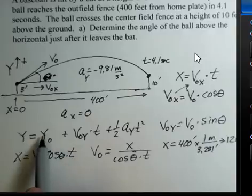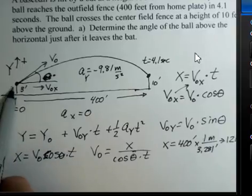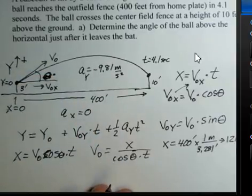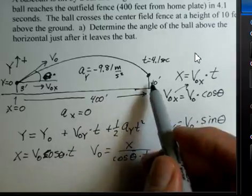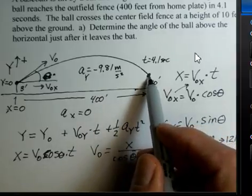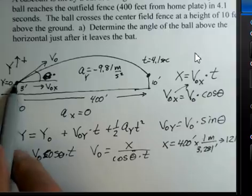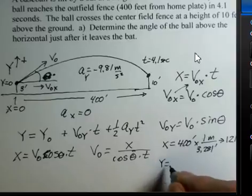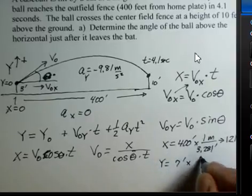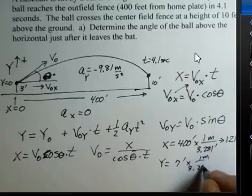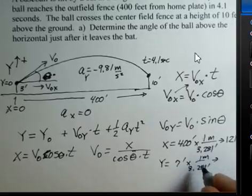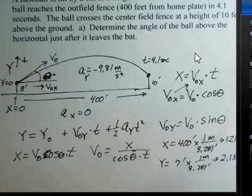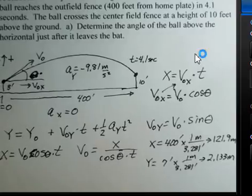I need y and y-naught. Let's change our coordinate system. Let's make y equal to zero where the ball was struck by the bat. When we get to the fence, we're going to be 7 feet higher than where we started. This is 3 feet off the ground, this is 10 feet off the ground. So the y-value would be 7 feet times this conversion factor, and that gives us a value of 2.133 meters for the y. And y-naught will be equal to zero.